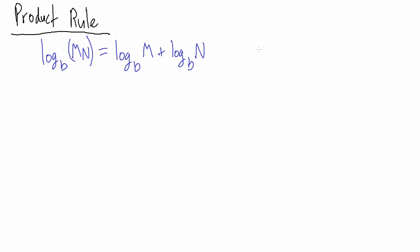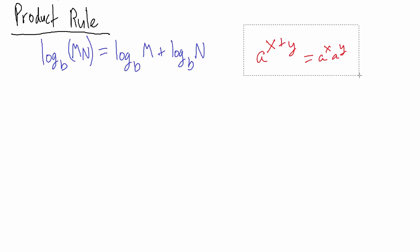First, let's point out that this is analogous to the exponential property that says a to the x plus y equals a to the x times a to the y. We're actually going to use this property to show why the product rule for logarithms is true.